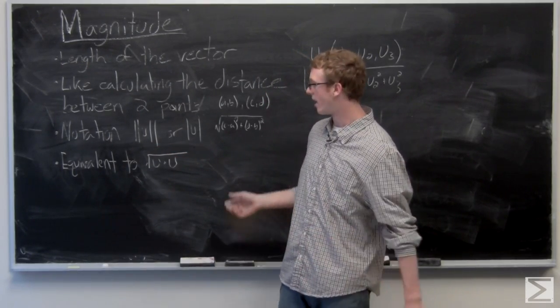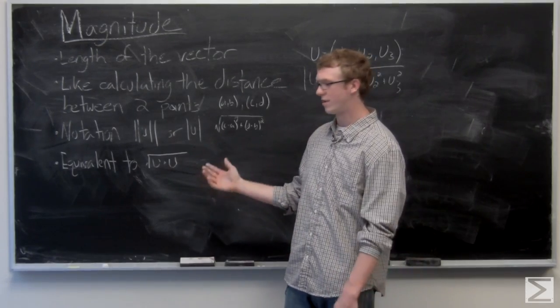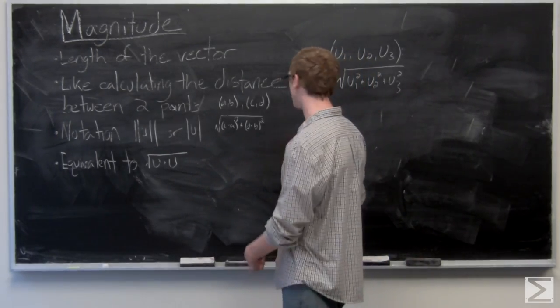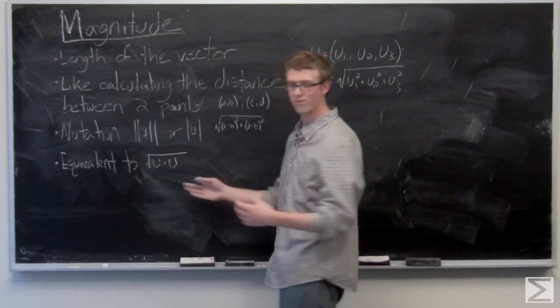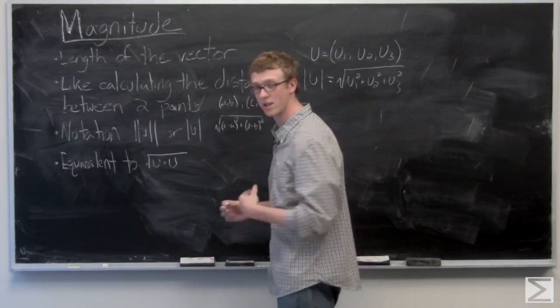And we can see that it's also equivalent to u dotted with itself. If we want to just take a look at that quickly, it's the square root of u dotted with itself.